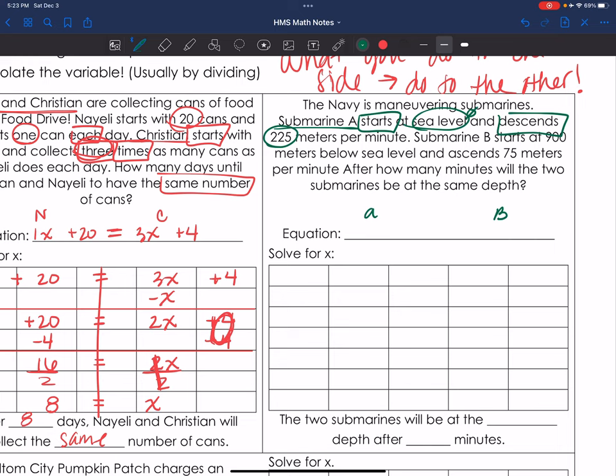225 per minute. So I know my multiplicative is going to be 225. And he's starting at sea level, which means it's plus 0. Submarine B starts at 900 below sea level. So I know my constant is negative 900 because he is 900 below sea level.